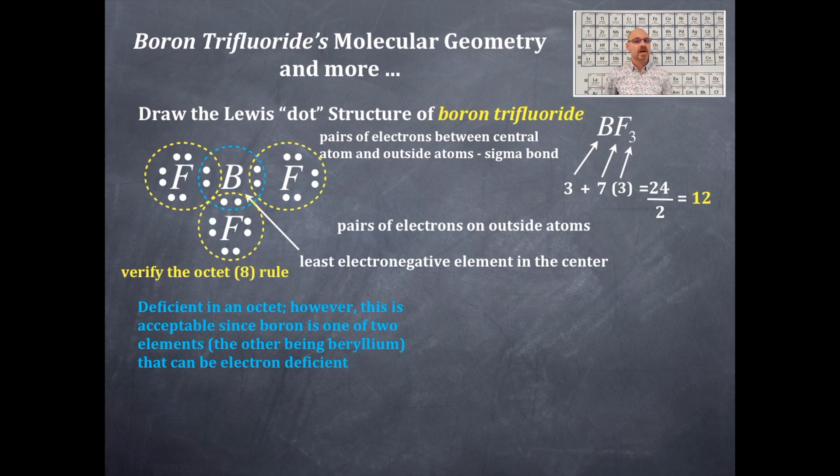Now I'm gonna check the octet rule for the boron. Wait, now boron is one of only two elements that can be electron deficient, that is deficient in an octet. Is that okay or not? Absolutely, there's boron and beryllium, those two elements can be electron deficient. Hydrogen, remember, is a duet that follows its own separate rule.